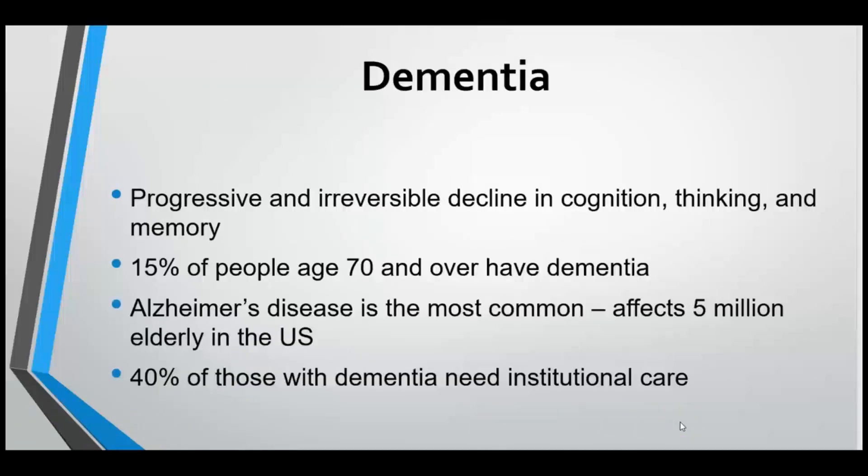Dementia is a progressive, irreversible decline in cognition, thinking, and memory. About 15% of people age 70 and over have dementia. Alzheimer's disease is the most common form, affecting about 5 million elderly in the US. About 40% of those with dementia need institutional care.